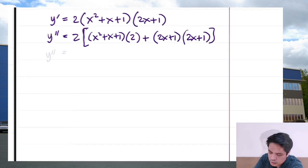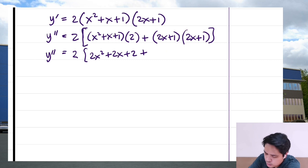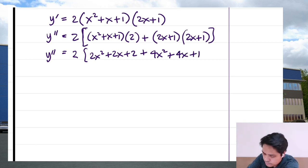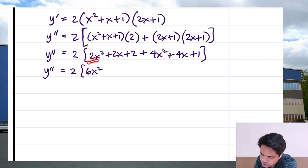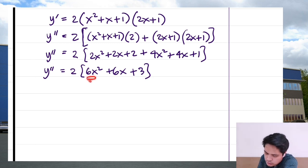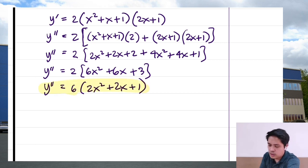Simplifying by expanding: we get 2 times (2x² + 2x + 2) plus (4x² + 4x + 1). Combining like terms, y double prime equals 2 times (6x² + 6x + 3). Factoring out 3, and multiplying by 2 gives 6. So y double prime equals 6 times (2x² + 2x + 1). That is our answer.